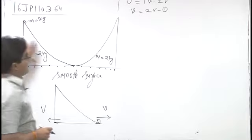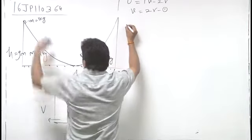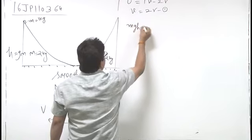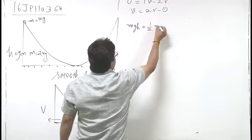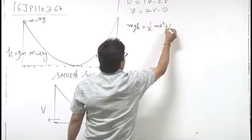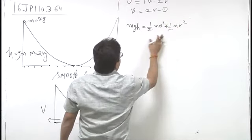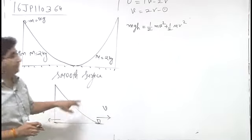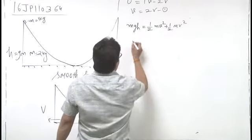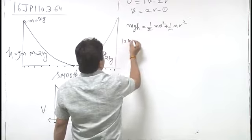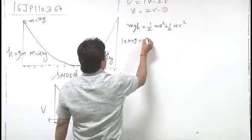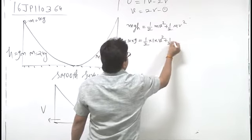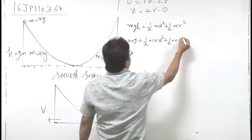Now by applying energy conservation: change in potential energy mgh equals gain in kinetic energy. So mgh = ½mv² + ½MV². Substituting: 1·10·9 = ½·1·v² + ½·2·V².